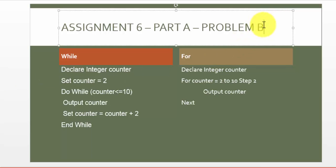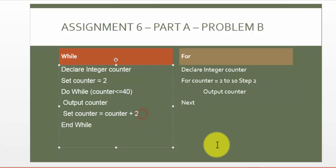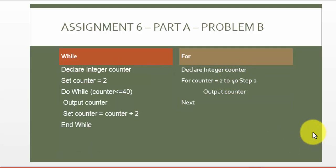In Part B, we need to display all even numbers from 2 all the way through the first 20 even numbers. Since there's a difference of 2, the first 20 even numbers will go from 2 through 40. So our starting point will still be 2, our ending point will be 40, and we're going to be incrementing by 2. If I take the for loop solution with this modification, I've pretty much achieved my solution.